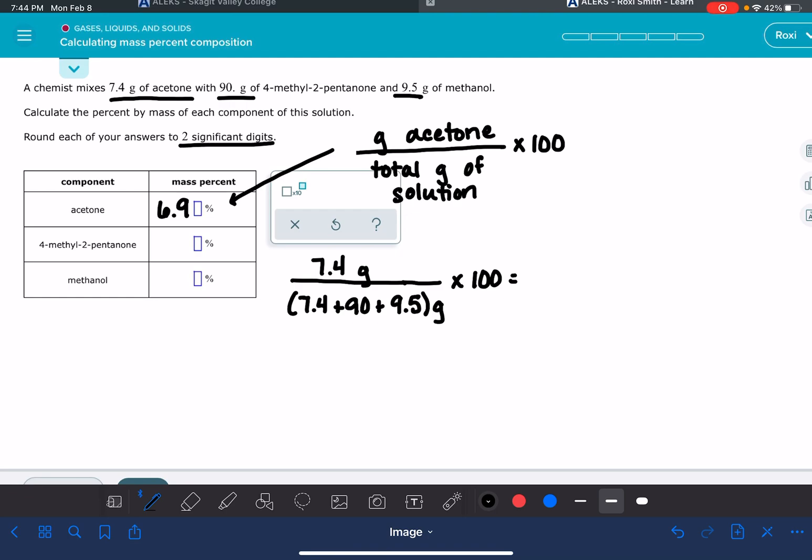So for the 4-methyl-2-pentanone, it's going to be the mass of the 4-methyl-2-pentanone divided by the total mass, which I'm just going to add up real quick. The total mass is 106.9 grams.